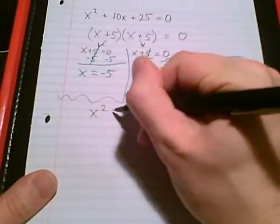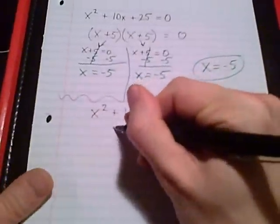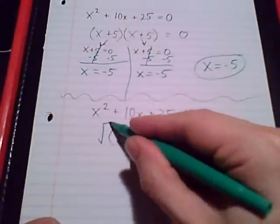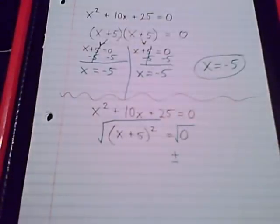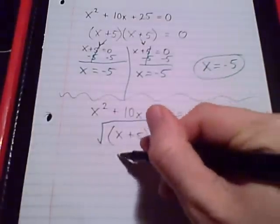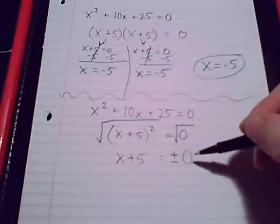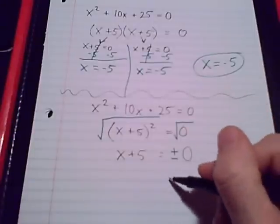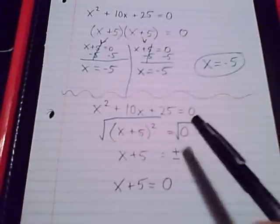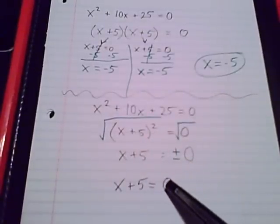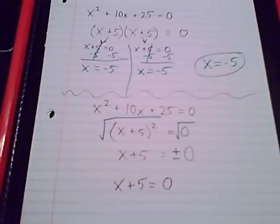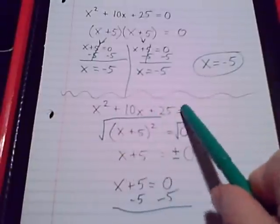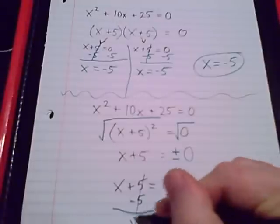If we took this equation, saw it was a perfect square, rewrote it as x plus 5 squared, and took the square root of both sides — you might miss something. You'd get positive or negative zero, but there's only one kind of zero, so positive or negative zero isn't really sensical. It's just x plus 5 equals zero — one solution. Certain quadratic equations can appear to give just one solution this way.